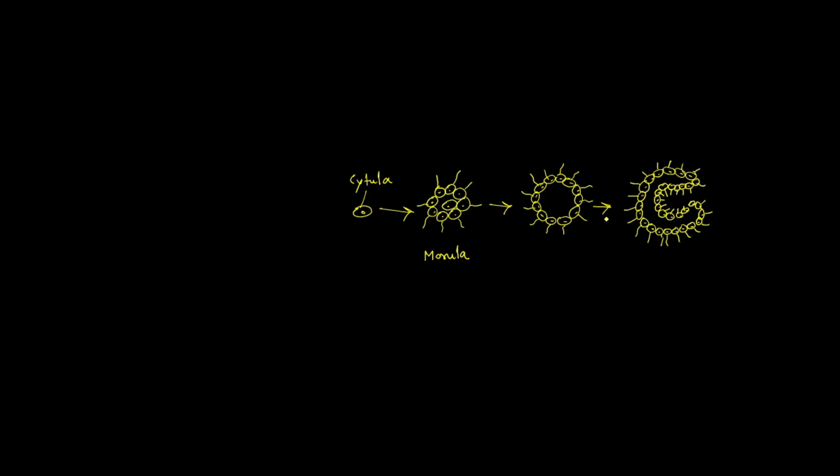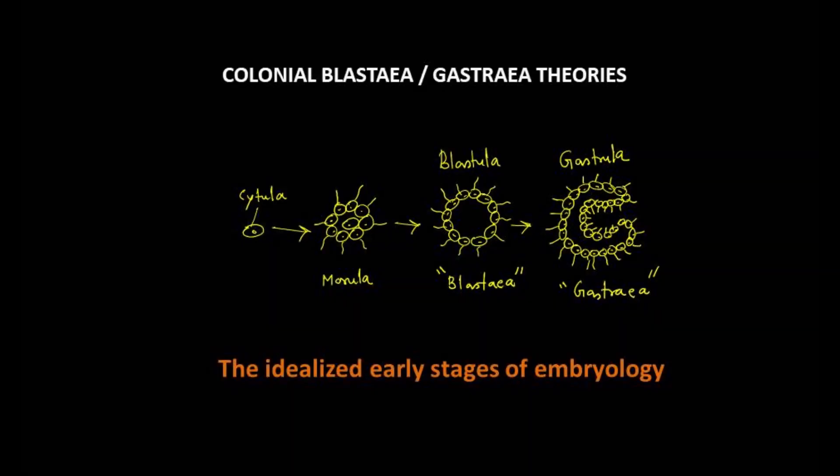These gastraea form a single, simple, two-layered, sac-like organism, readily give rise to the similarly constructed ancestral cnidarians from which other metazoans subsequently evolved.